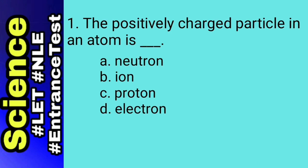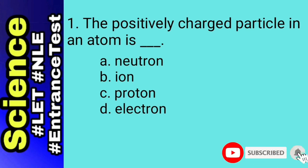For this number, let's do elimination. For letter A, neutron has no charge. For letter D, electron is a negatively charged particle. So we are going to eliminate A and D. We are left with only two choices, B and C. Ion may be positively or negatively charged, so the answer will be proton, letter C.